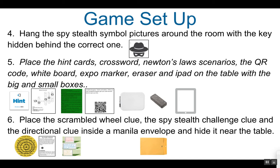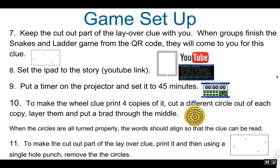The whiteboard, expo marker, eraser, and iPad are all optional, but helpful. Next, place the scrambled wheel clue, the spy stealth challenge clue, and the directional clue inside a manila envelope and hide it near the table. Keep the cutout part of the layover clue, which looks like this, with you. When groups finish the snakes and ladders game from the QR code using the iPad, they will then come to you for this clue. Set the iPad to the video on YouTube for the story, or if you would prefer not to do that, you could always just print that slide of the PowerPoint. Lastly, put the timer to 45 minutes and you're good to go.